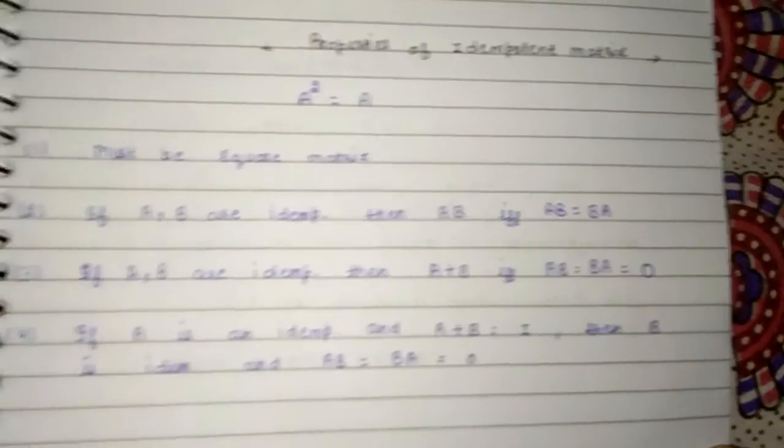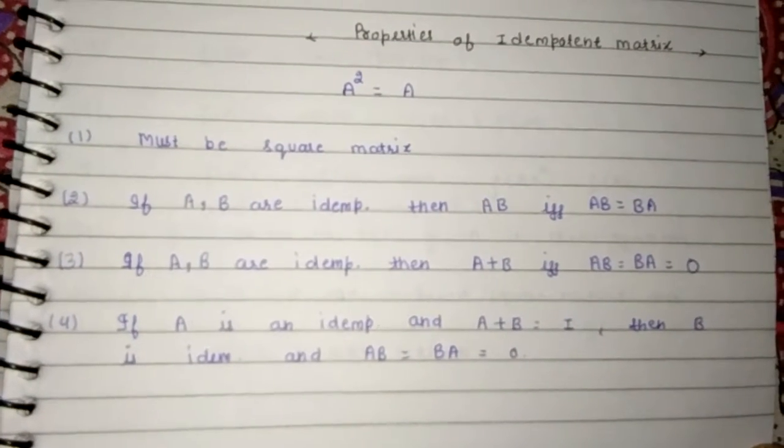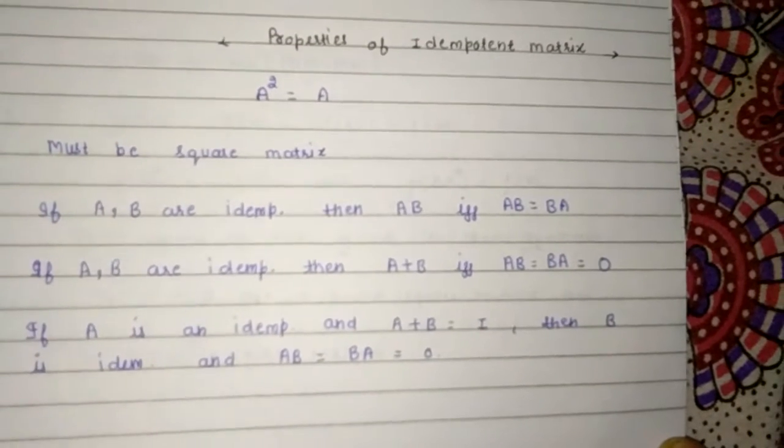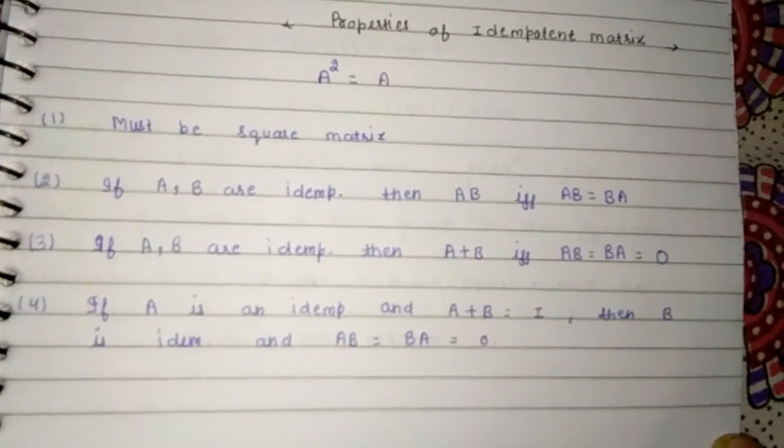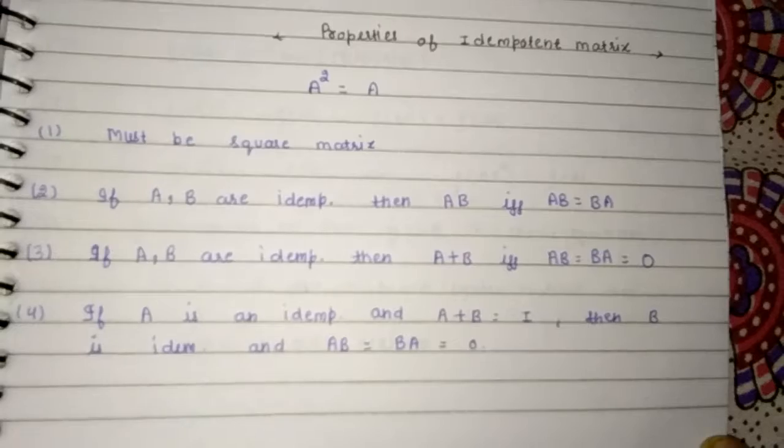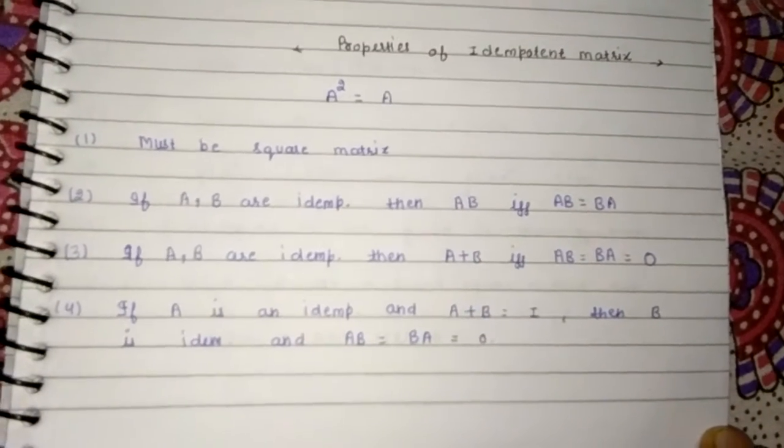If A is an idempotent and A plus B is I, then B is an idempotent and AB is equal to BA is equal to zero. So this is about idempotent matrix.